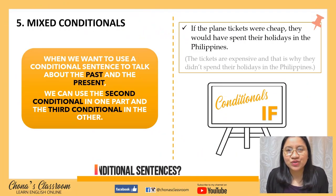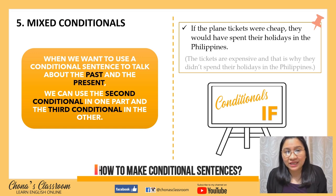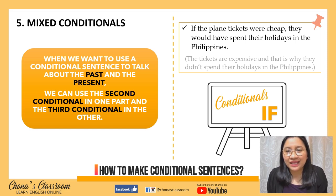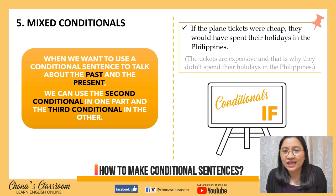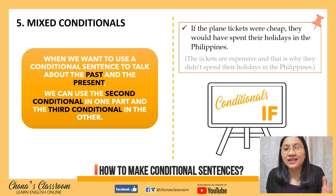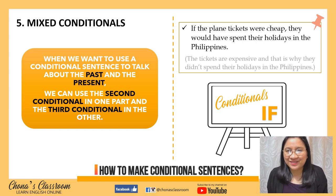If we want to use a conditional sentence to talk about the past and the present together, we can use the second conditional in one part and the third conditional in the other — this is called the mixed conditional. For example: 'If the plane tickets were cheap, they would have spent their holidays in the Philippines.' The if clause is from the second conditional and the result clause is from the third conditional. This sentence means the tickets are expensive, and that is why they didn't spend their holidays in the Philippines.